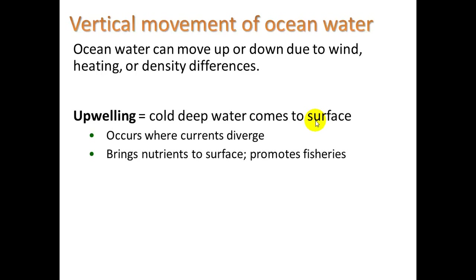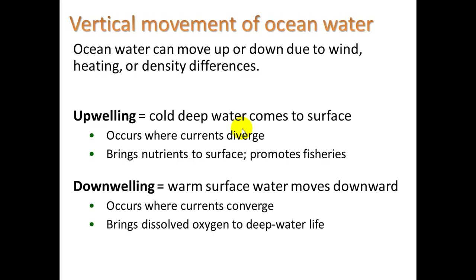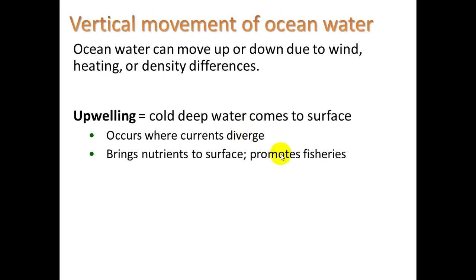Ocean water can move up or down due to wind, heating, or density differences. We just talked about upwelling. It can also occur when two currents diverge — naturally, one current's going to go underneath the other depending on salinity and temperature — and so that can be another case where lower water gets pushed up.